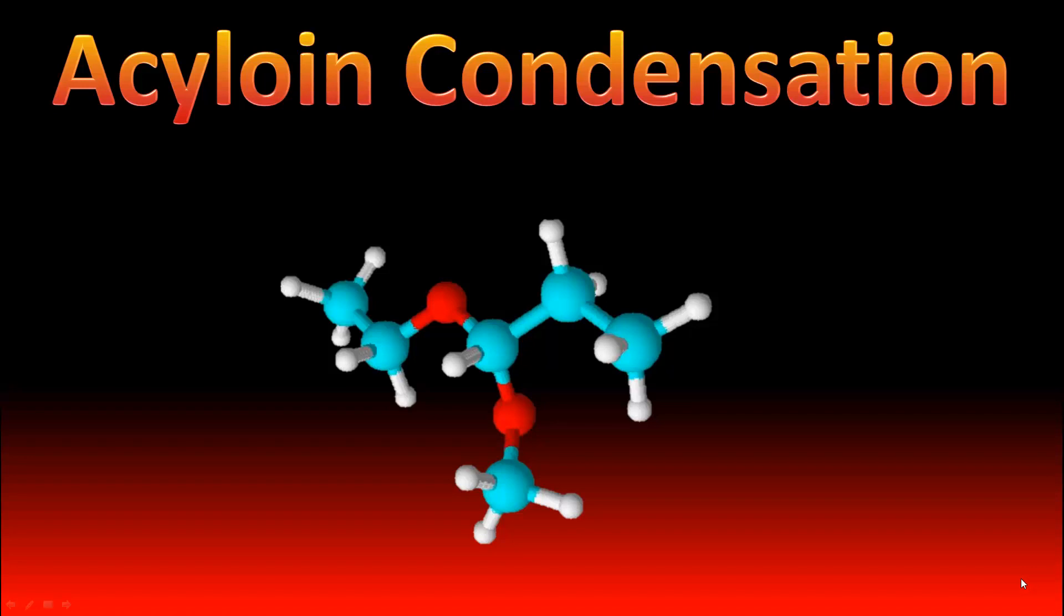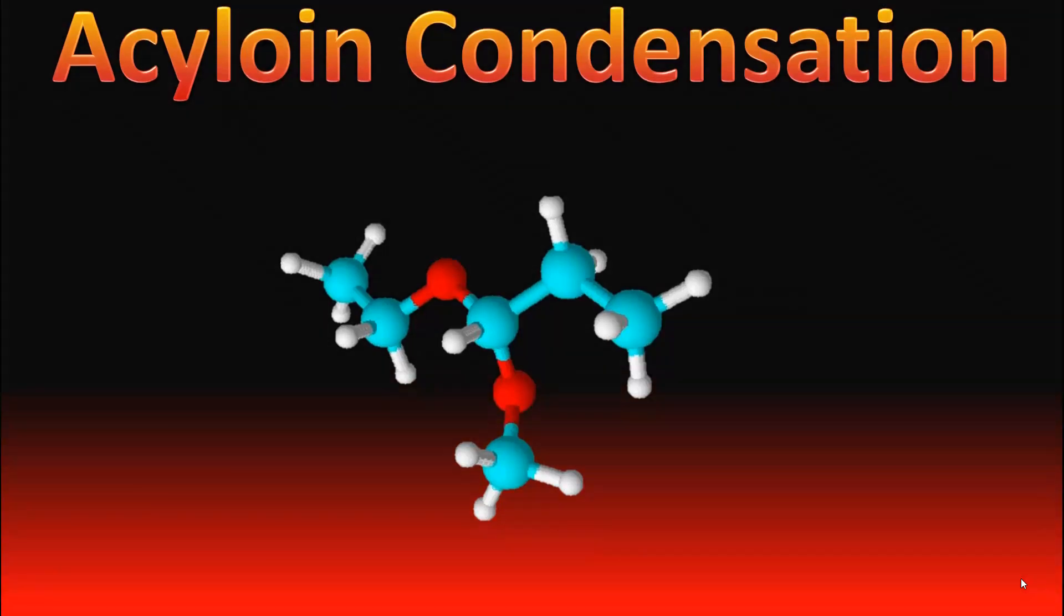Hello and welcome to this video on acyloin condensation. Acyloin condensation is the reaction between two molecules of an ester to yield an alpha hydroxy ketone in the presence of metal like sodium. So what happens is you have an ester group and let this be R1 and this be R2.